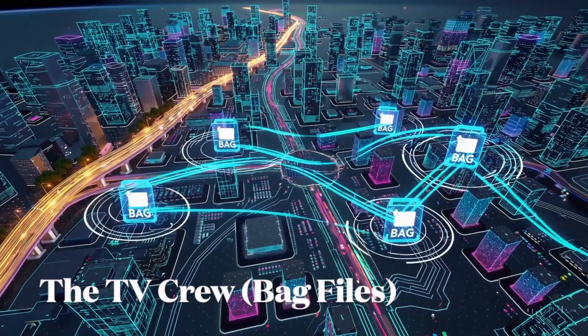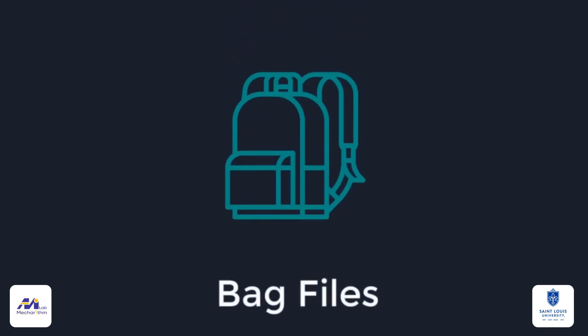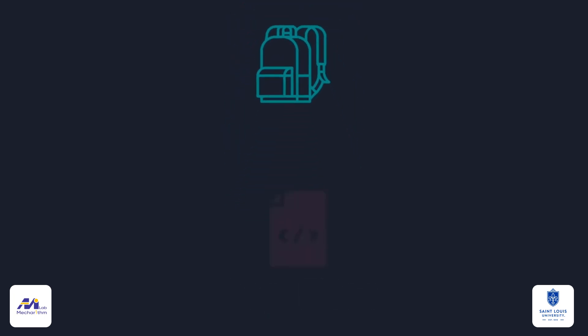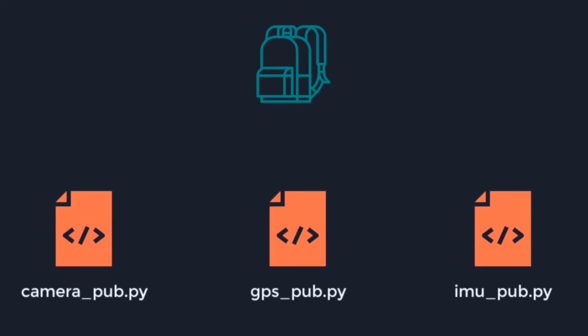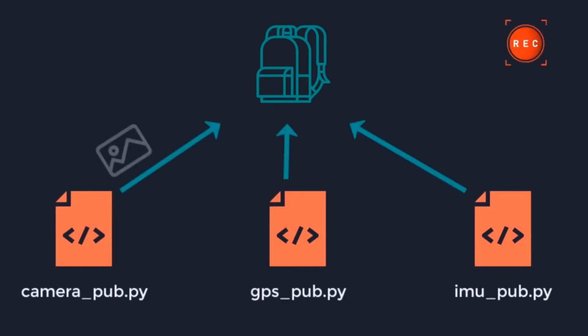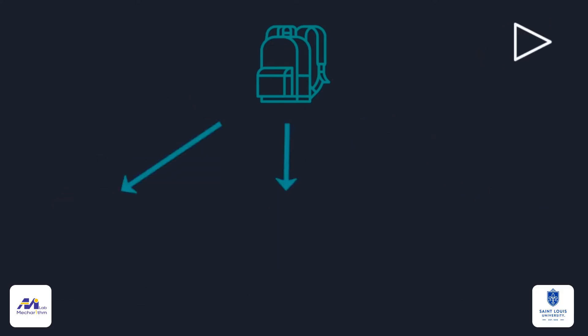Cities are often recorded for analysis. In ROS 2, this function is served by bag files. A bag file captures all messages traversing the roads, preserving a record of the system's communication. Later, this record can be replayed, allowing developers to reconstruct events, analyze failures, or train machine learning models with authentic robotic data. Bag files are essential tools for both research and diagnostics.